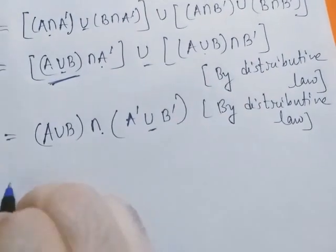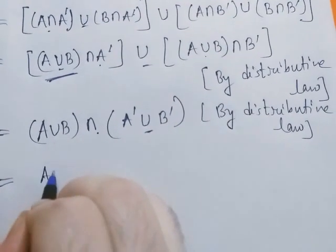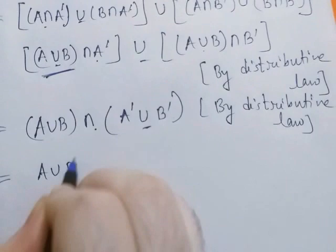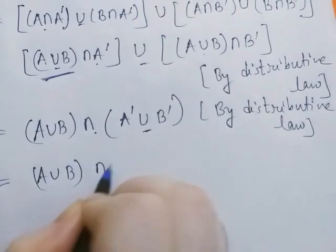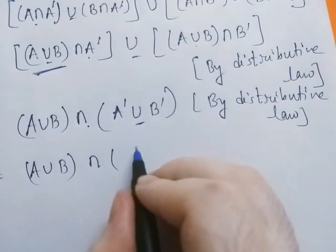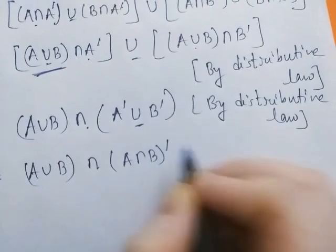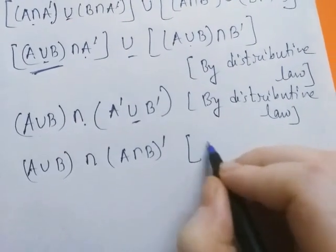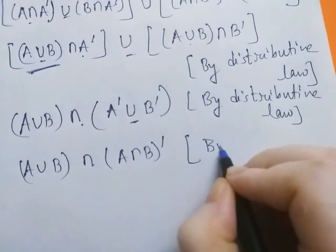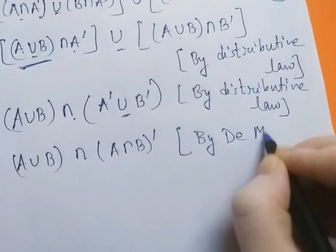Now this equals (A ∪ B) ∩ (A' ∪ B'). By De Morgan's law, (A' ∪ B') can be written as (A ∩ B)', so this becomes (A ∪ B) ∩ (A ∩ B)'.